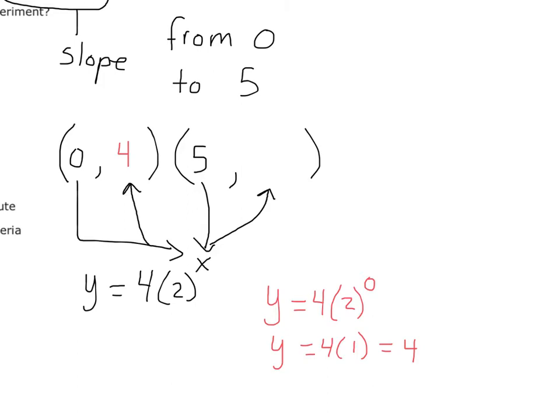Now, why am I trying to find two points? Because it asks for the average rate of change, which means slope. So I know if I can get two points, I can calculate slope.